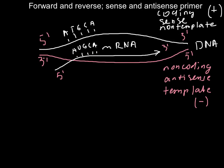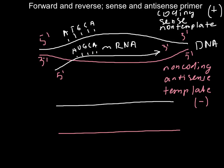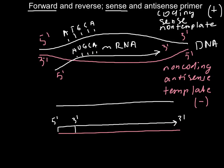This naming will help us name the primers. Here is a second picture showing the same strand of DNA with our primers. Here is our first primer — this is the 5' end and this is the 3' end of the primer. It grows in the 5' to 3' direction, which is the forward direction. It also produces the same sequence as on the sense strand of the DNA, so this is called the forward and sense primer.